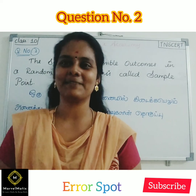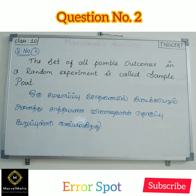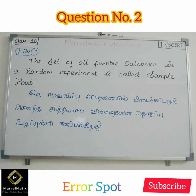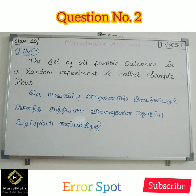Question number 2: The set of all possible outcomes in a random experiment is called sample point. Take your own time to spot the error.